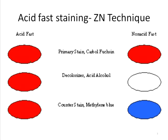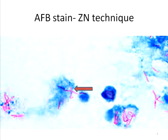Under the microscope at the 100x objective, this is how a sputum smear for acid-fast bacteria looks. You can see the background stained blue with the secondary dye, methylene blue, but the acid-fast bacteria retain the pink dye and appear pink in color. The arrow points to the acid-fast bacteria.